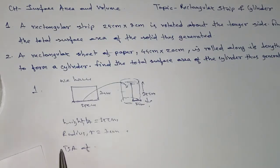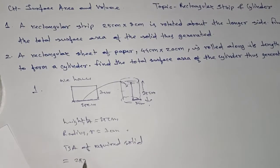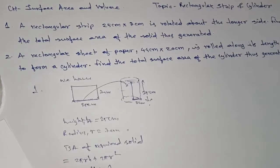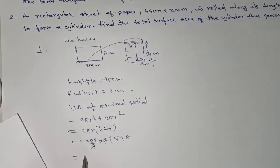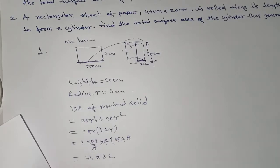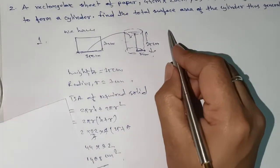We need to find the total surface area of the resulting solid cylinder. The formula is 2πr(h + r). So: 2 × (22/7) × 7 × (25 + 7) = 44 × 32 = 1408 centimeters squared. This is your answer for the first problem.